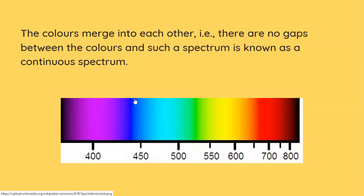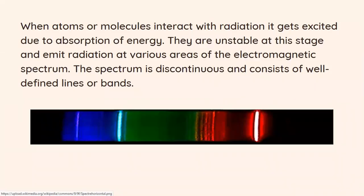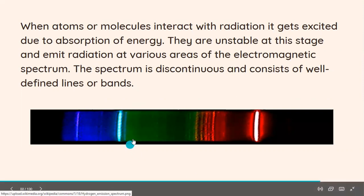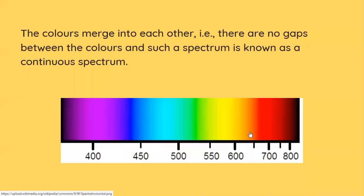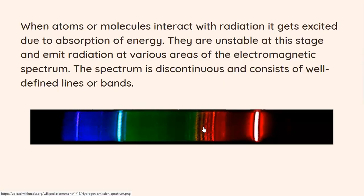When atoms or molecules interact with radiation they get excited because they absorb energy and they're unstable. So when they absorb energy they become unstable and they will have to come back to the original state and when this is observed this spectrum will have bands. If you notice over here you have certain bands over here and here and here. This is quite different from each other and this is called a discontinuous spectrum.